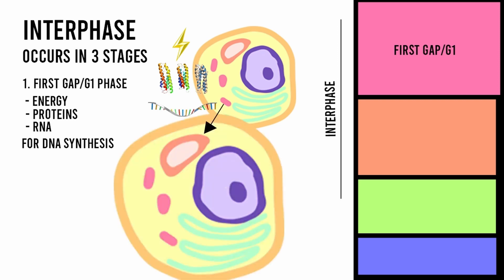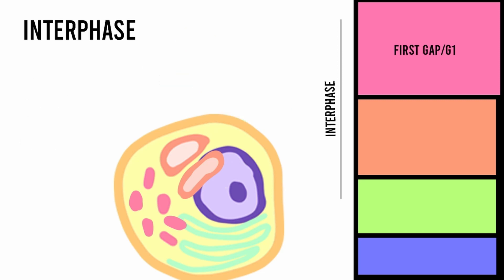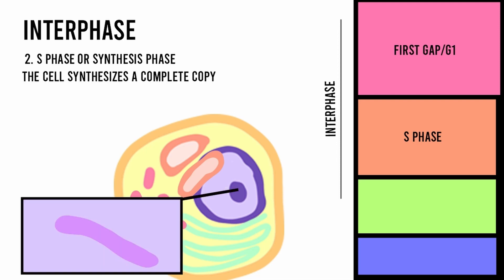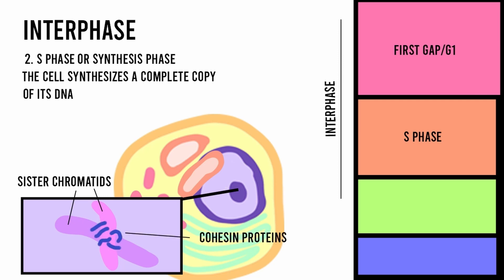Furthermore, the cell grows larger and duplicates some of its cellular contents and organelles. The second stage is known as the S phase, or the synthesis phase. During the synthesis phase, the cell synthesizes a complete copy of its nuclear DNA, resulting in two identical pairs of DNA known as sister chromatids. These sister chromatids are held together by cohesin proteins and linked together at a region at the center of the two chromatids called the centromere.